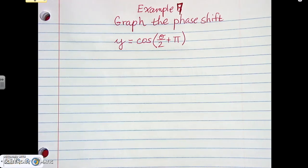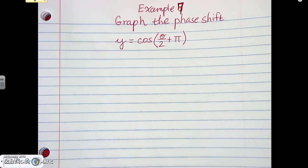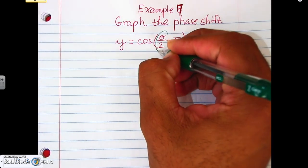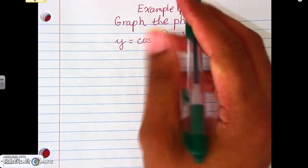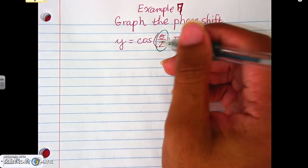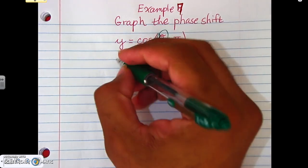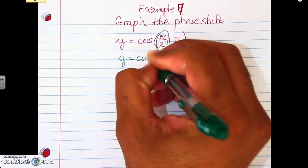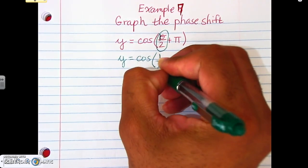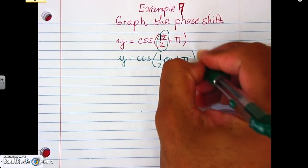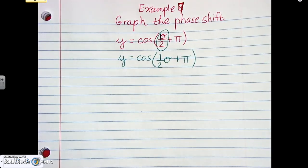We're looking at Example 7, where we're going to graph the phase shift. We've talked about phase shift and direction, so now we're actually going to graph it. First, let's find our phase shift, but before that let's make sure we rewrite the expression as a fraction. It's understood to be a one in front of theta, so we're really talking about one-half theta plus pi.